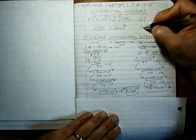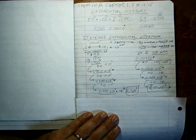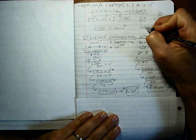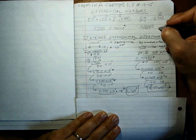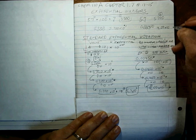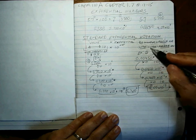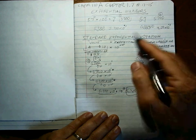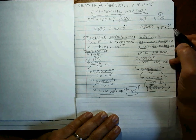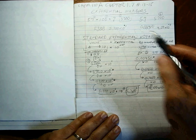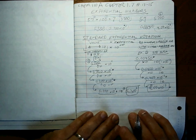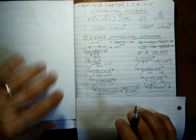Now let's try this one: 0.00450. We need to get that number to between 1 and 10. 1, 2, 3 swoops — so we would write that as 4.50 times 10 to the 3. But this time, because it's a little number, we'll have a negative exponent. Don't worry about which direction you swoop. The jumps tell you what the number is; the value of the number as a whole tells you whether it's positive or negative. That's the way we deal with writing exponentials.